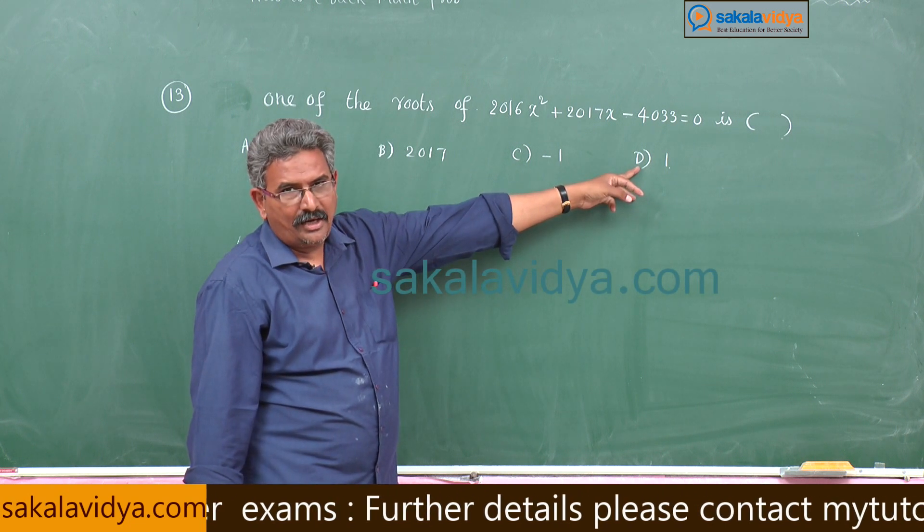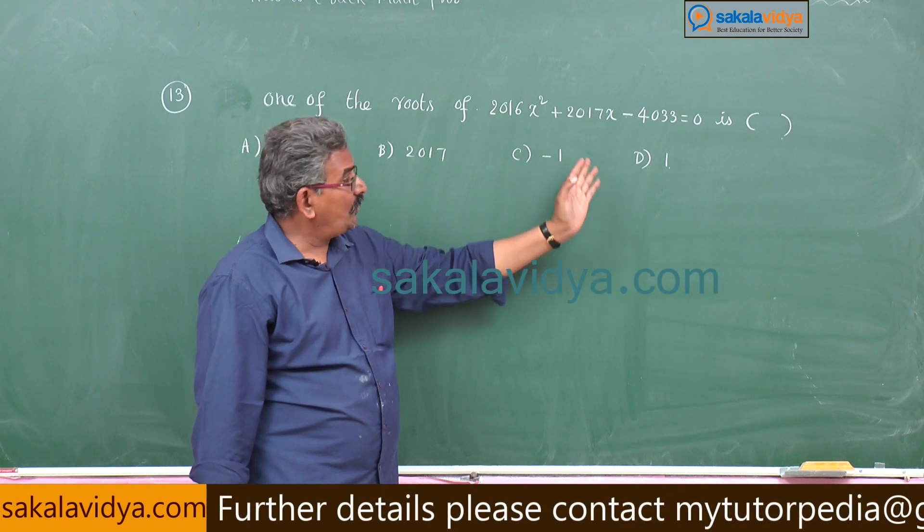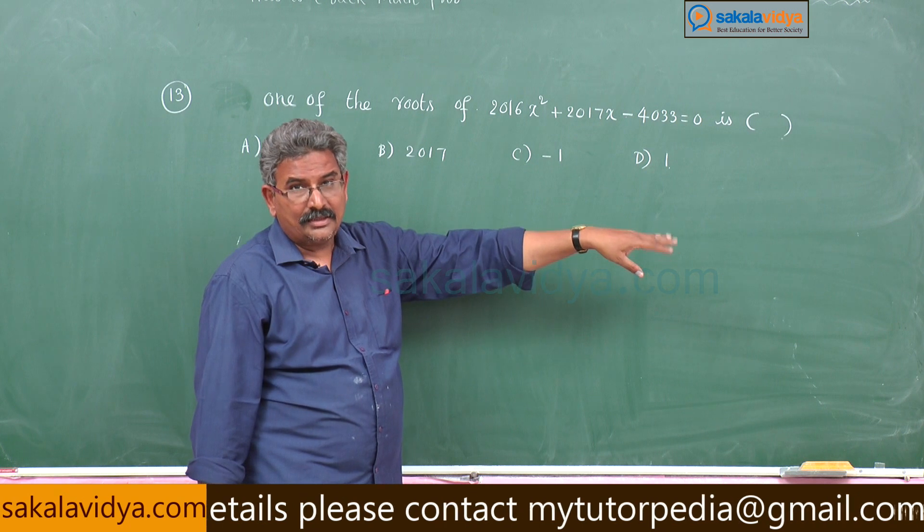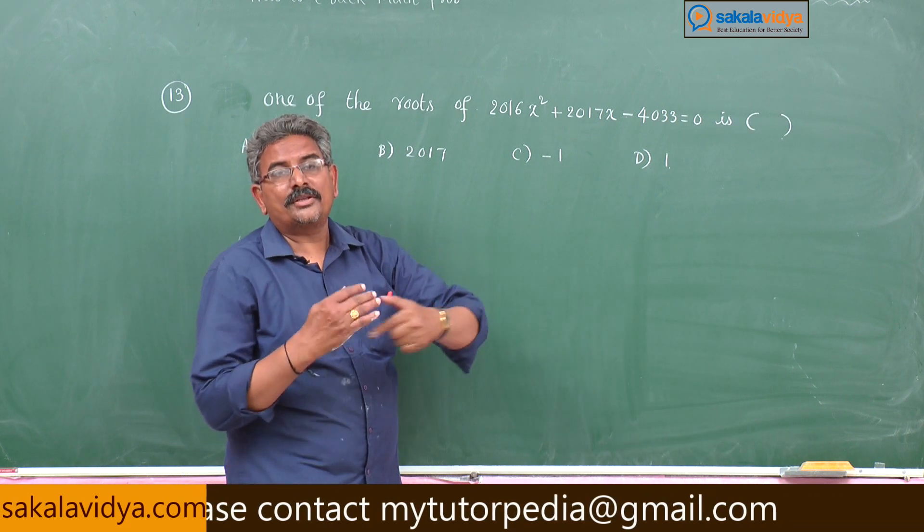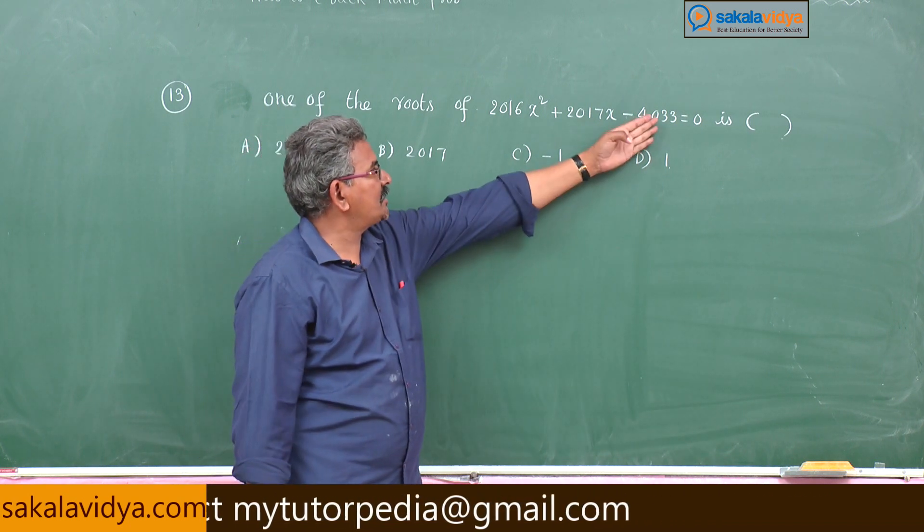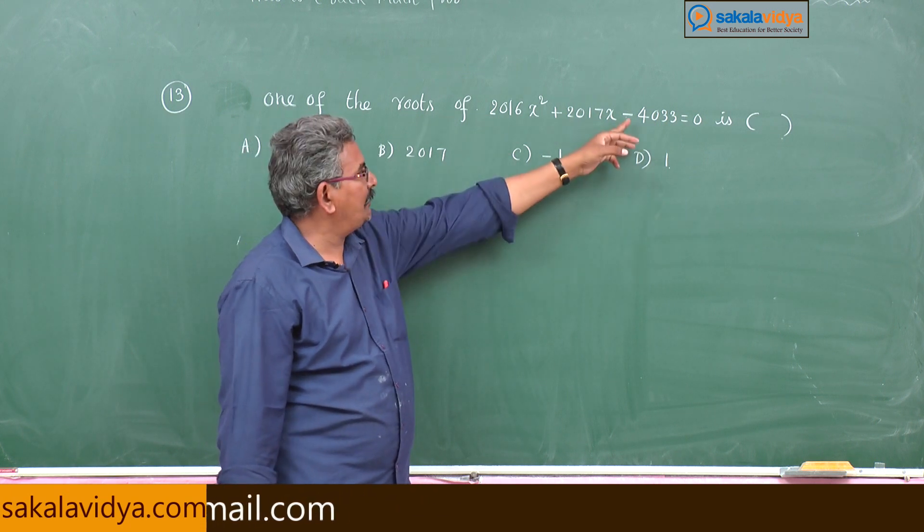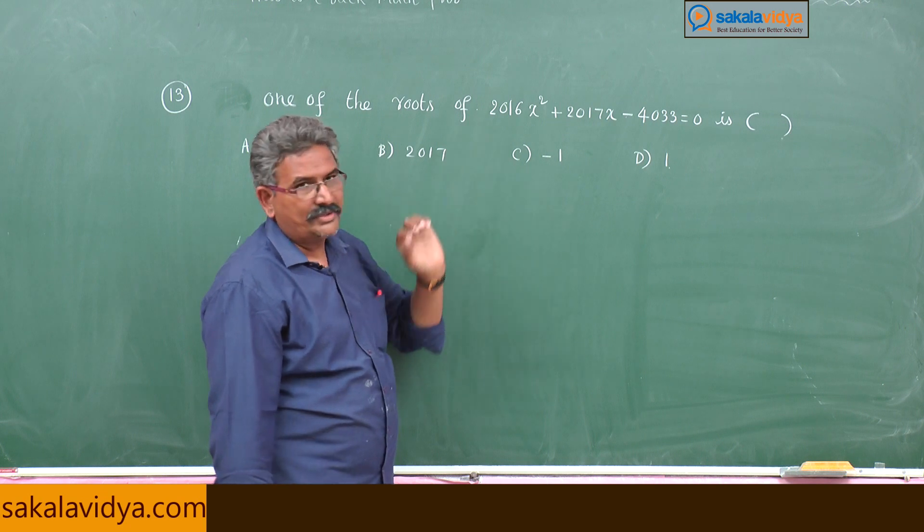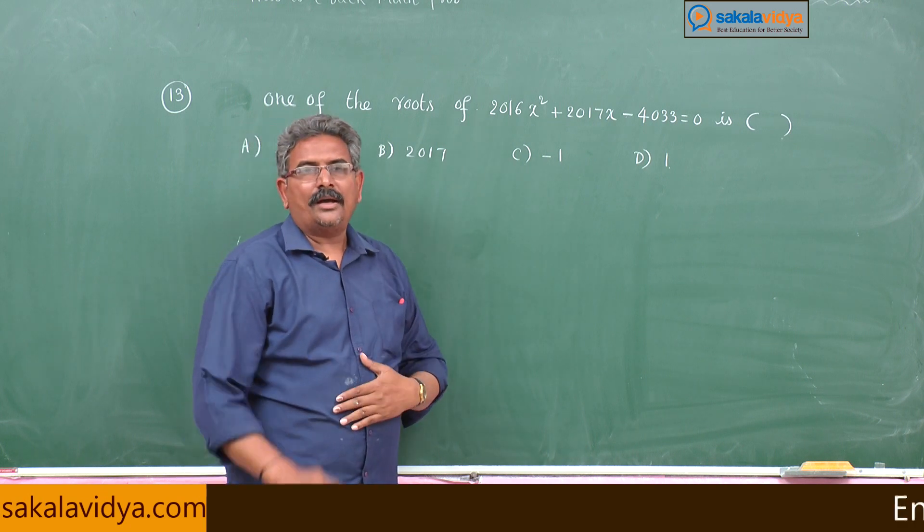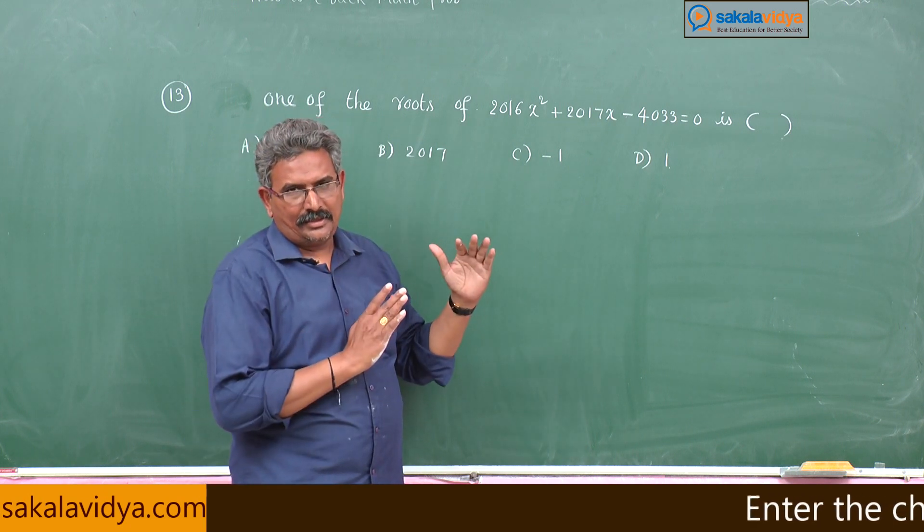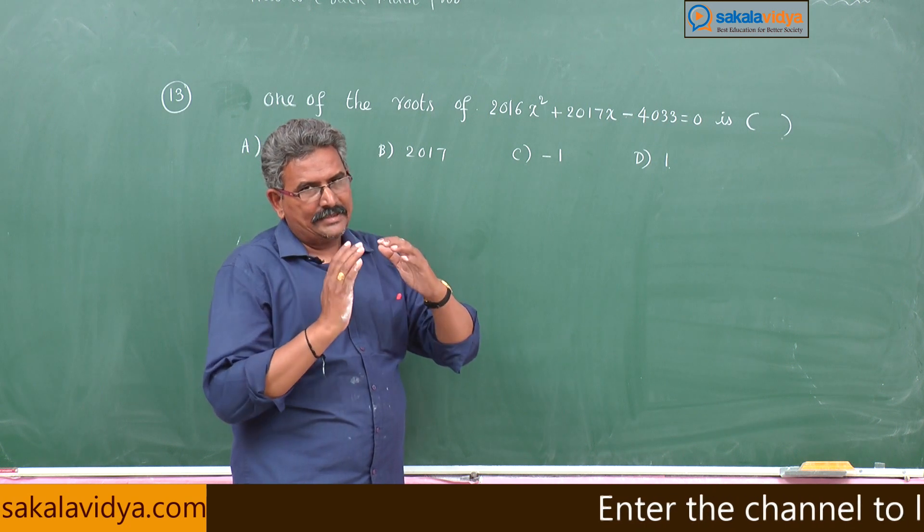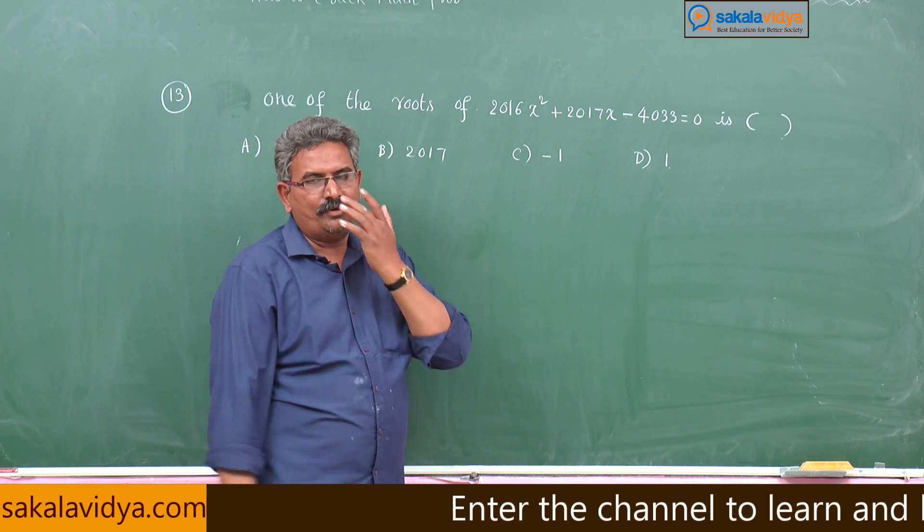That means d will be the correct option. What will be the other root? The other root will be minus 4033 by 2016.